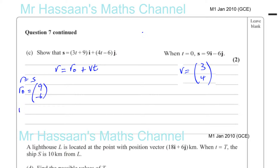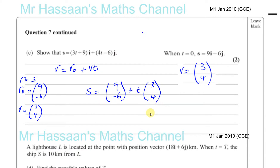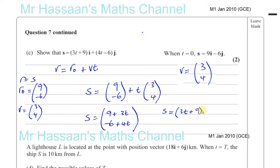The velocity vector is (3, 4). So S equals R0, which is (9, -6), plus V times T, which is T times (3, 4). Simplifying by adding the two vectors together: the I component is 9 plus 3T, and the J component is minus 6 plus 4T. We can rewrite this as 3T plus 9I plus 4T minus 6J, which is exactly what we needed to show.